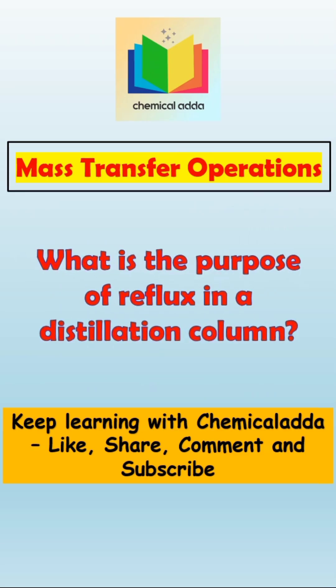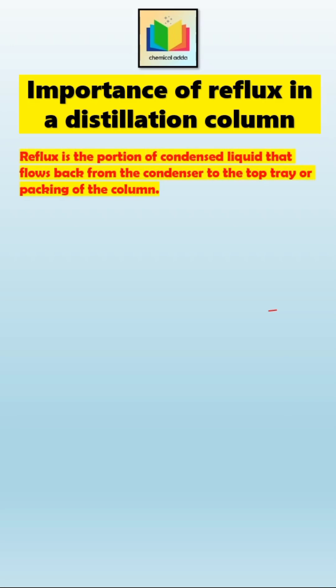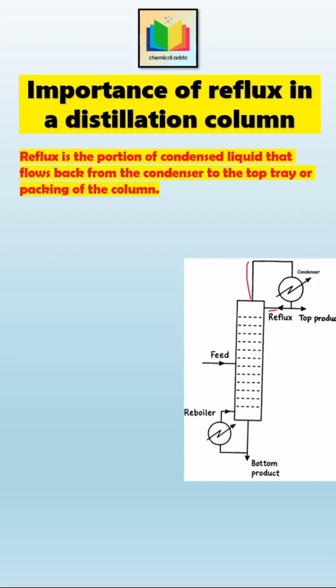What is the purpose of reflux in a distillation column and why is it so important for efficient separation? Reflux is the portion of condensed liquid that flows back from the condenser to the top tray or packing of the column. When vapor rises up the column, it eventually reaches the condenser at the top where it gets cooled and condensed into liquid. This condensed liquid is split into two parts: one part is collected as the distillate and the other part is returned back to the column. This returning liquid is called reflux.